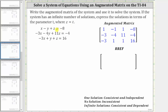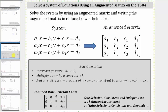A system of three equations with three unknowns will always have a three by four augmented matrix, where the equations must be in standard form, meaning the x, y, and z terms are on the left side and the constants are on the right. In the augmented matrix, the coefficients of x are in column one, the coefficients of y are in column two, the coefficients of z are in column three, and the constants are always in column four.